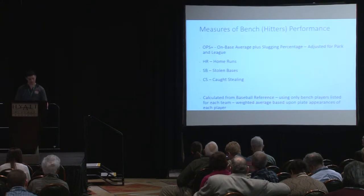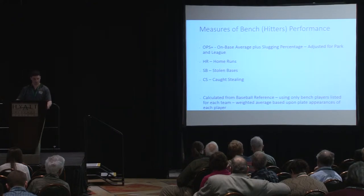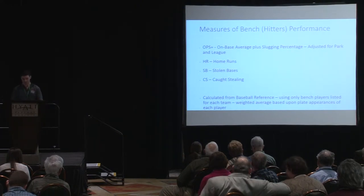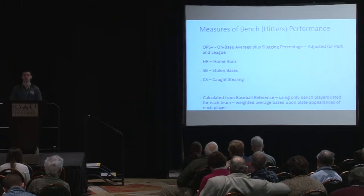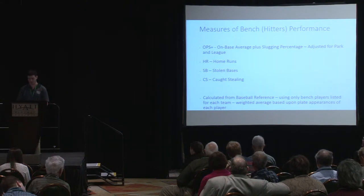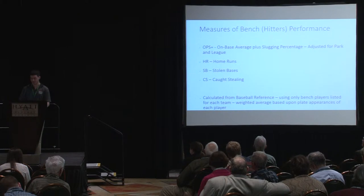To measure bench performance of hitters, we used OPS+, which is on-base average plus slugging percentage adjusted for park and league, as well as home runs, stolen bases, and caught stealing. The key is that we used a weighted average for each team amongst bench hitters only, according to baseball reference. Ultimately, we only included OPS+ in our model because it is the most promising of the bench statistics, as the other variables do not add statistical value to the regression model.